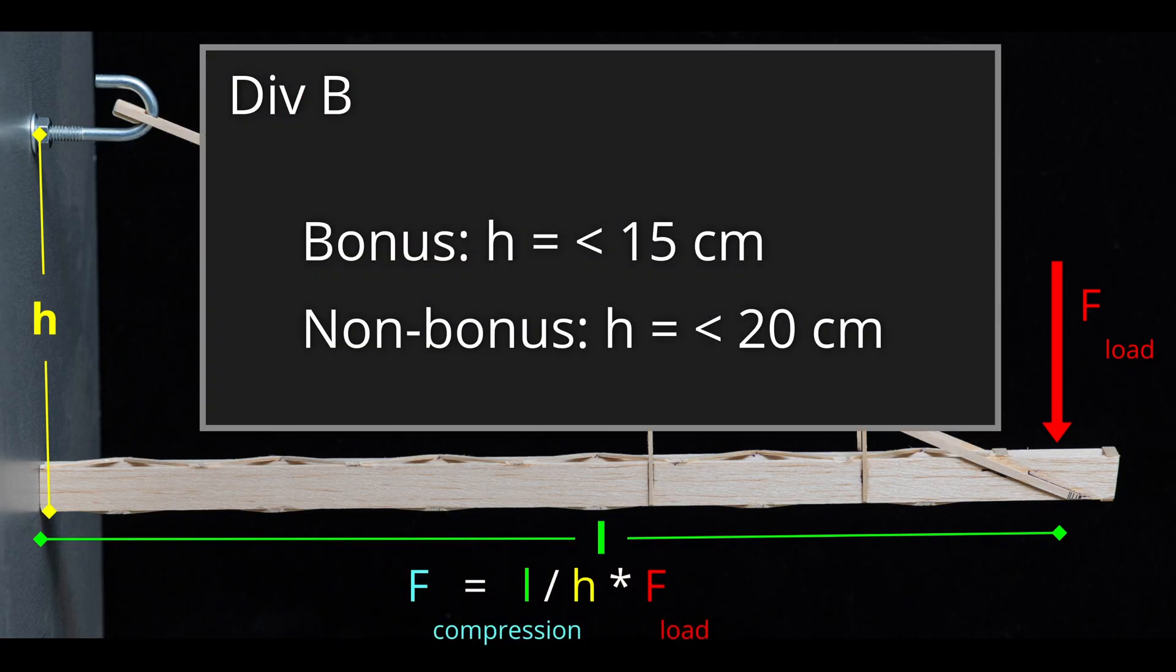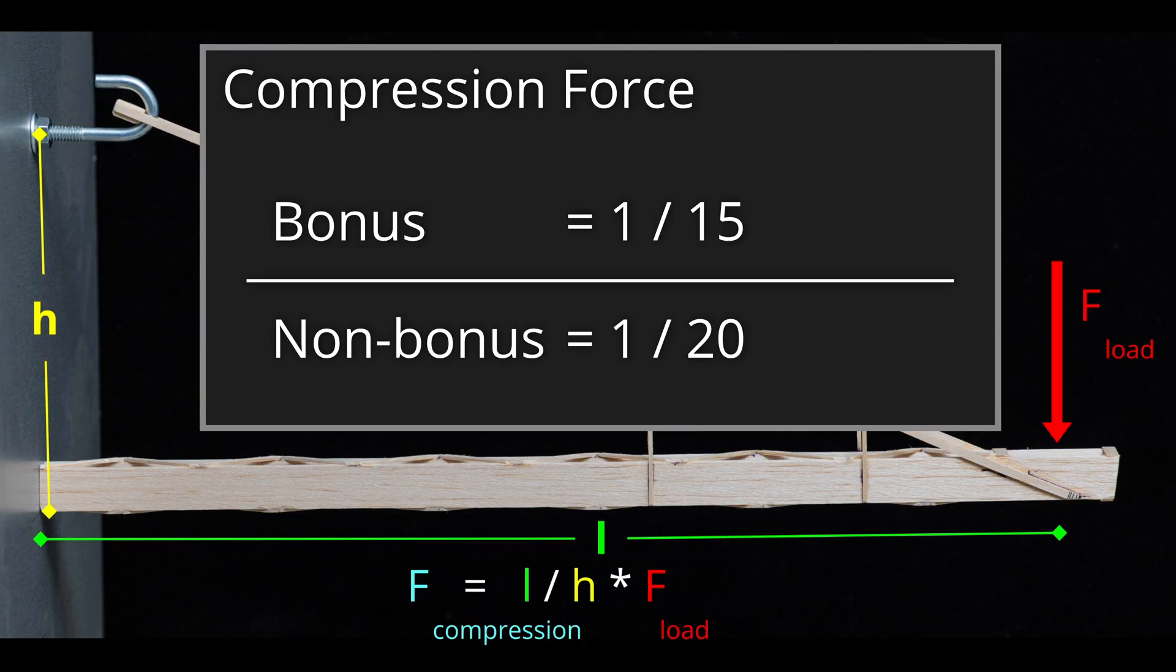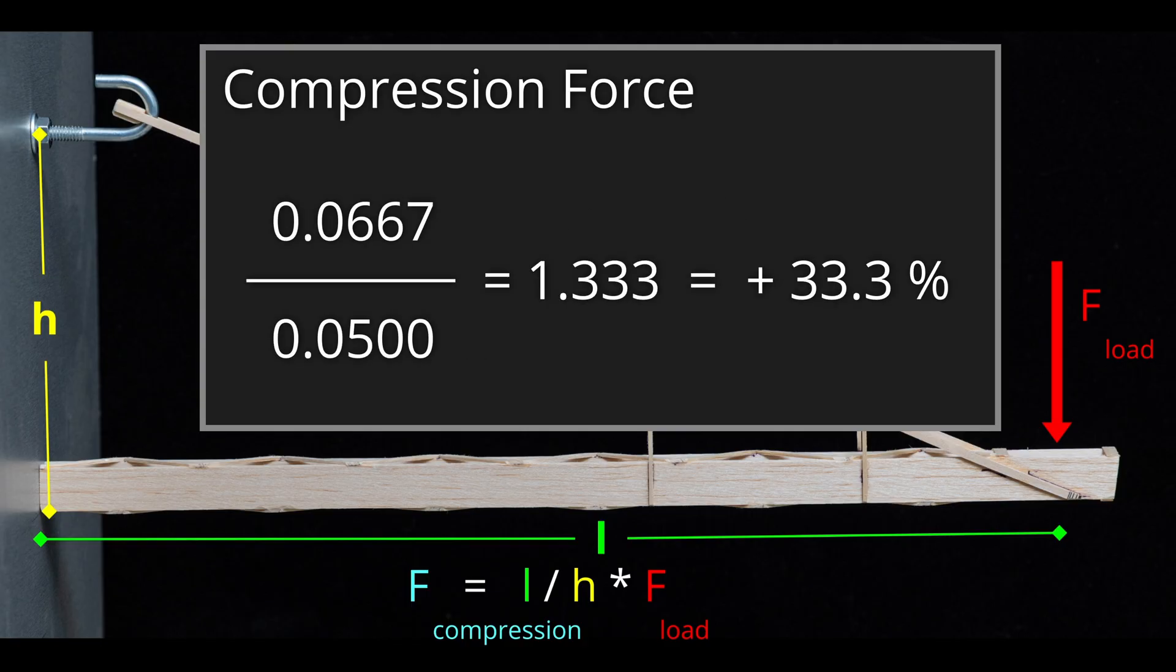For Division B, the only design difference between the bonus and non-bonus is the height h. The bonus requires the height to be less than 15 cm and the non-bonus must be less than 20 cm. If we divide the bonus compression force by the non-bonus design force, you can see that the length and applied load cancel each other out and the final result is just the ratio of the inverse of the heights. That makes things very easy to figure out and our internal forces for the bonus design are approximately 33% more.